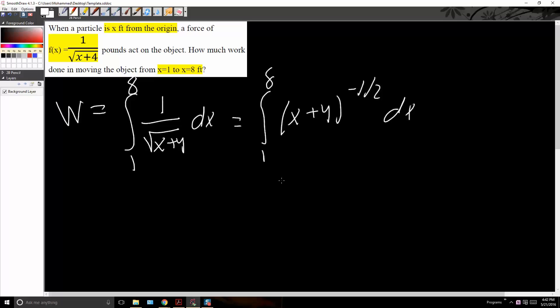Now we take the anti-derivative. So negative 1 half plus 1 is 1 half. We divide by 1 half which is equivalent to multiplying by 2. So we can say that it will be 2 times x plus 4 to the 1 half. And we plug in 1 to 8.